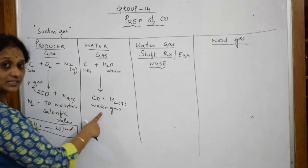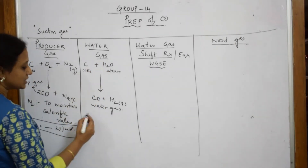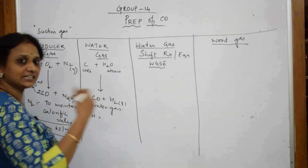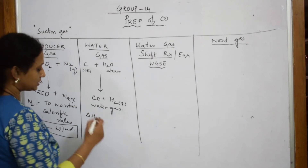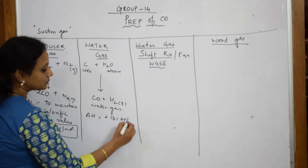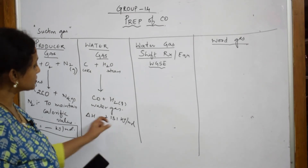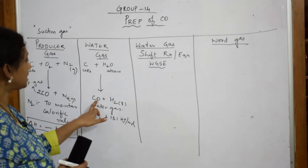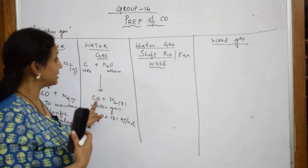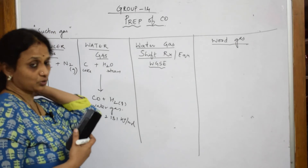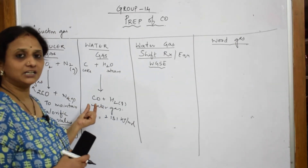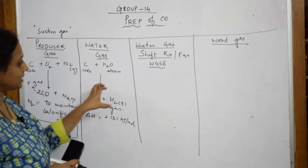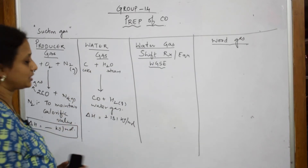This water gas reaction, when it happens by heating steam over coke, the reaction is highly endothermic — it absorbs heat, and then only the reaction proceeds further. It is 131 kilojoules per mole. Every time you are supposed to supply energy to this reaction, then only you will get products. Otherwise, as I said, carbon monoxide will become poisonous. To prevent this, heat has to be supplied continuously for the reaction to proceed in the forward direction.